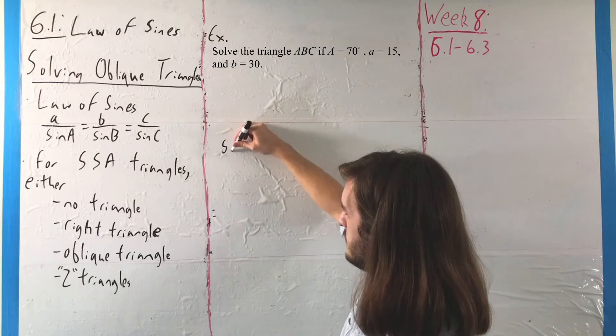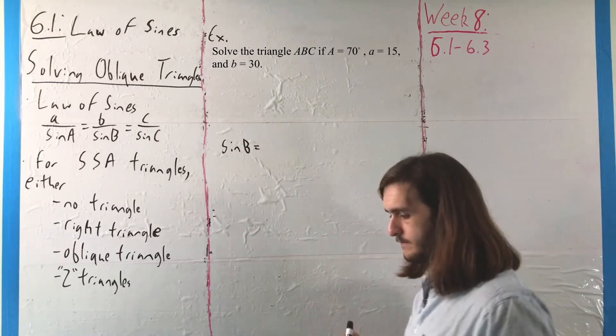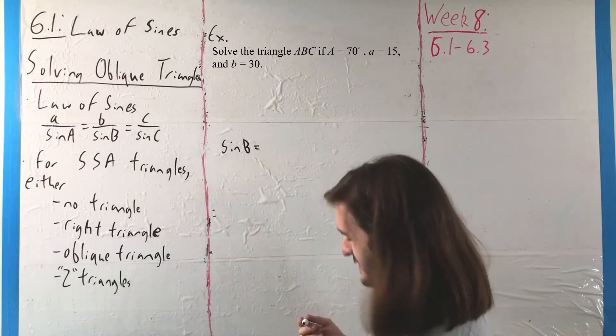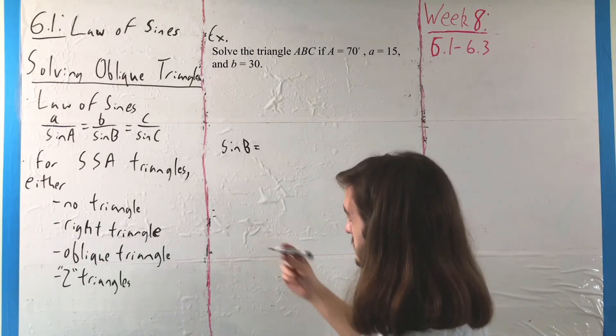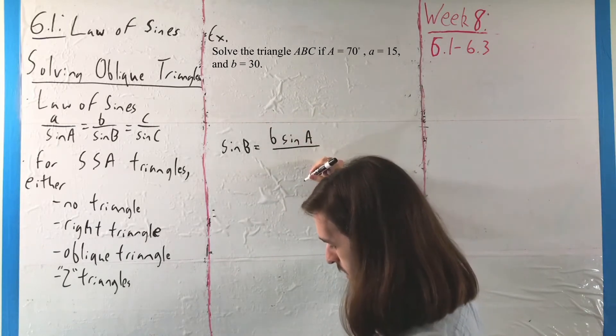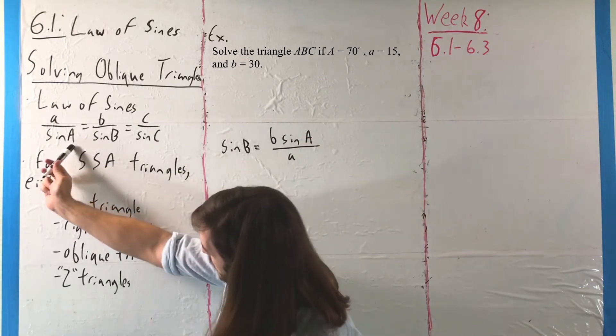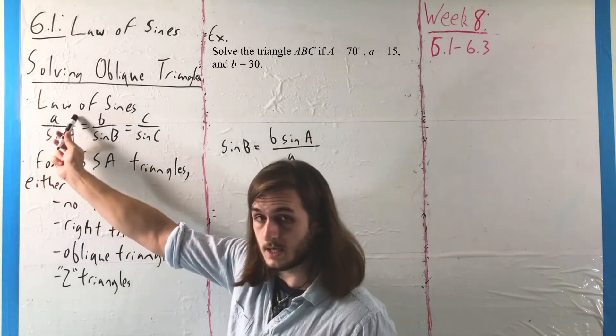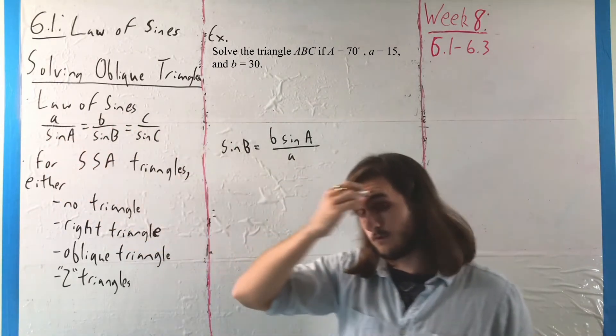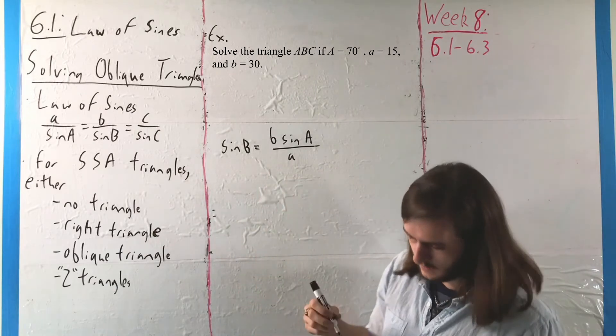That is, from a rearrangement of the law of sines, we will have that sine of B is equal to B times sine of A over A. We're going to multiply over the sine of B, multiply over the sine of A, and divide over the A. This will cross multiply and divide to rearrange and get sine of B by itself.